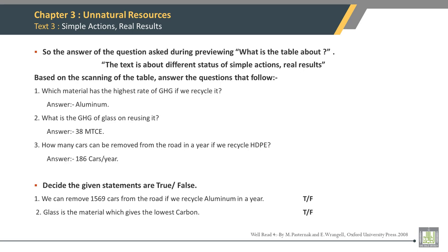Decide if the given statements are true or false. Statement: We can remove 1,569 cars from the road if we recycle aluminum in a year. The statement is false. Statement: Glass is the material which gives the lowest carbon. The statement is true.